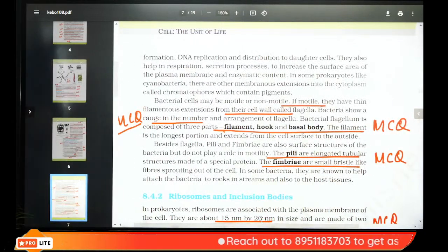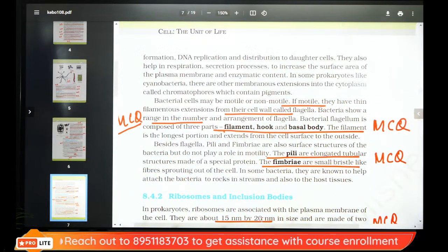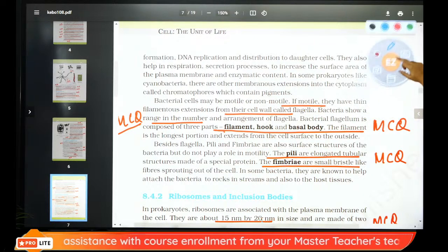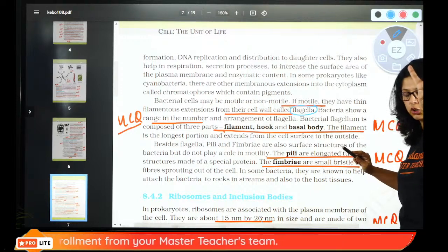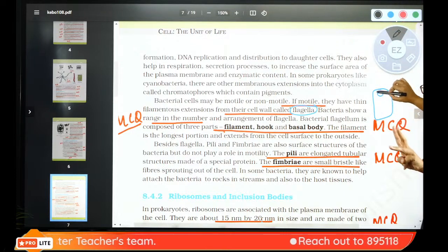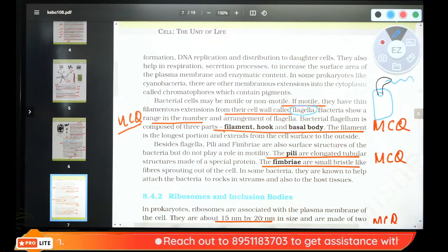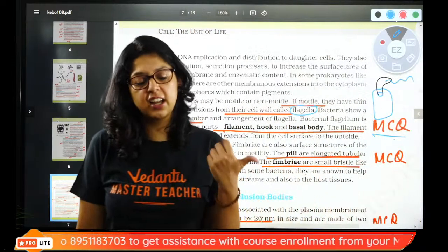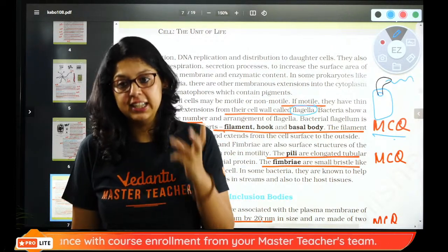Bacterial cells can be motile or non-motile. If motile, they have flagella. Flagella have three parts — MCQ favorite: basal body, hook, and filament. Flagella helps in locomotion.